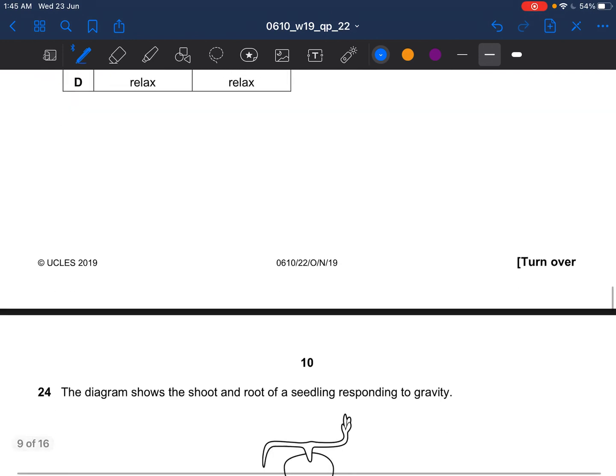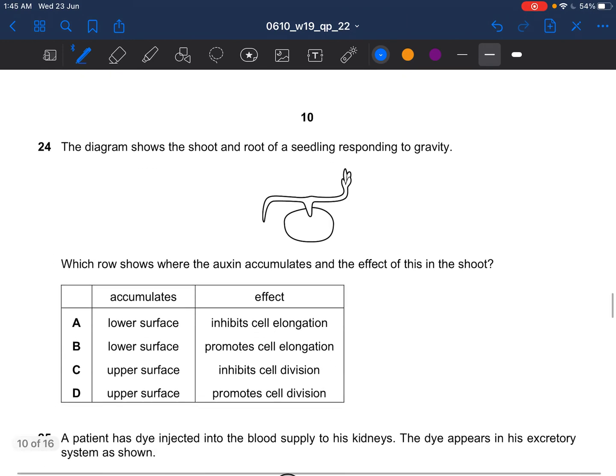Next question. The diagram shows the shoot and root of a seedling responding to gravity. Which row shows where the auxin accumulates and the effect of this in the shoot. Gravitropism. It accumulates on the lower surface, and hence this side would grow faster. Auxins promote cell elongation. So the answer would be B.